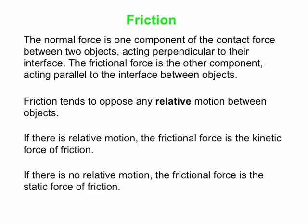If there's no relative motion, the frictional force is the static force of friction. So the two objects are in contact and they're not moving with respect to one another. They could both be moving together, for instance, but if they're not moving with respect to one another, then we have a static force of friction acting, if there is a friction force at all.